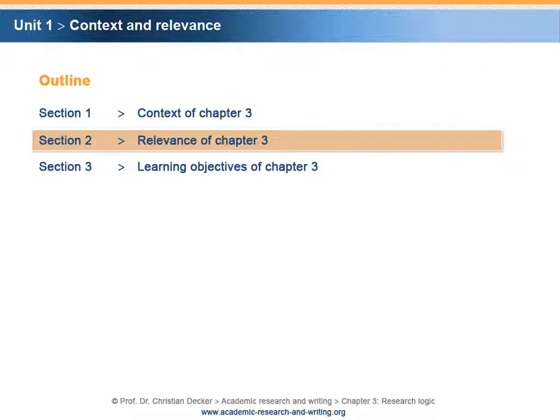Section 2 – Relevance of Chapter 3. In previous chapters, a basic understanding of academic research and theory in practice as well as corresponding academic principles has been developed. The next step is to look at the underlying logic of research processes. This is important in order to understand how conclusions, or better to say answers to research questions, are derived.